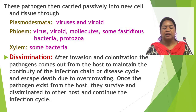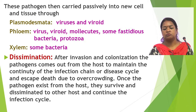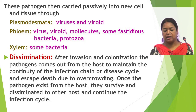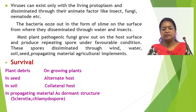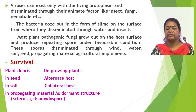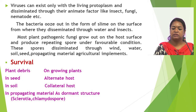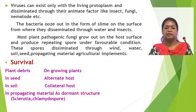The next event is dissemination. After invasion and colonization, the pathogen comes out from the host to maintain the continuity of the infection chain and to escape death due to overcrowding. Once the pathogen exits from the host, they survive and disseminate to other hosts. Viruses can exit only with the living protoplasm and disseminate through animate factors like insects, fungi, and nematodes. Bacteria ooze out in the form of slime on the surface, from where they disseminate through water and insects. Most plant pathogenic fungi grow out on the host surface and produce repeating spores under favorable conditions, which disseminate through wind, water, soil, seed, propagating materials, and agricultural implements.